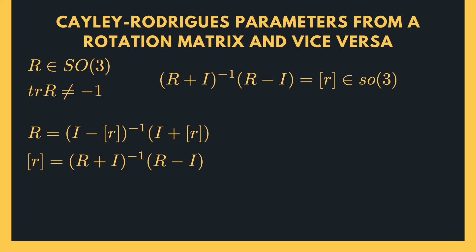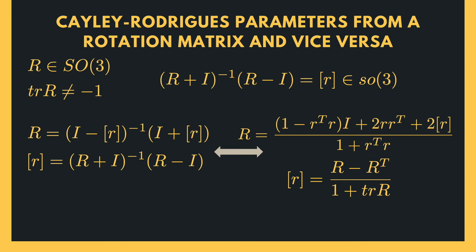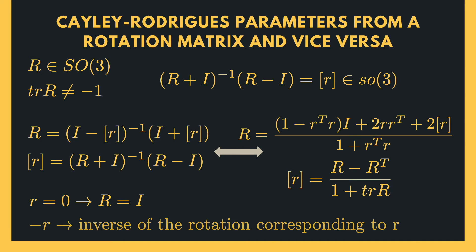These equations can also be explicitly computed as shown. As roboticists, we are not interested in how these equations are derived and what the complex math behind them is, but rather we are interested in their application — so don't worry about the derivation. From these equations, we can see that Cayley-Rodriguez parameters r equal to 0 corresponds to the identity matrix R equal to I, and minus r is the inverse of the rotation corresponding to r.